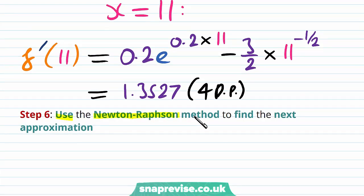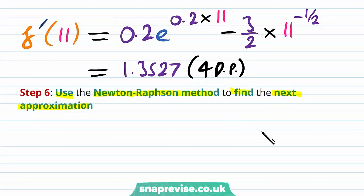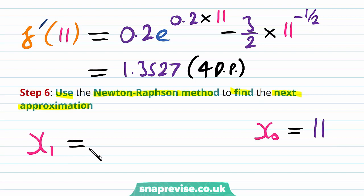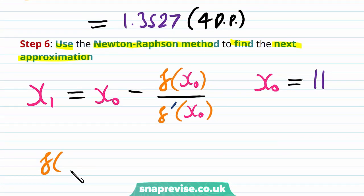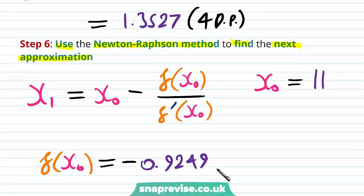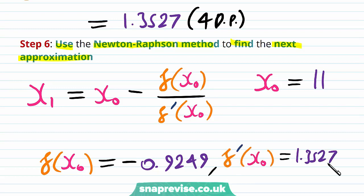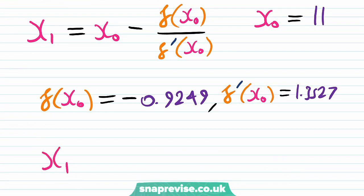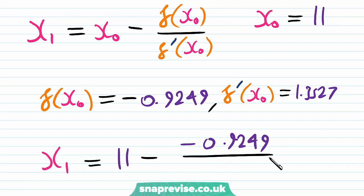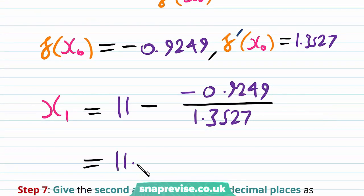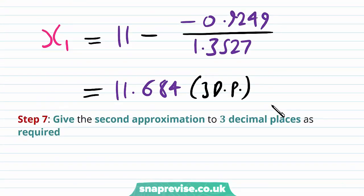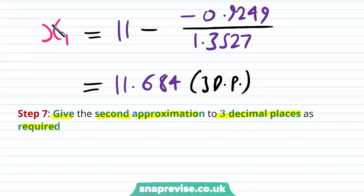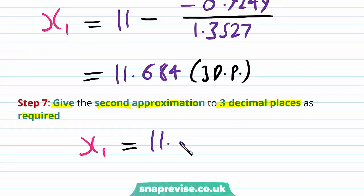Our sixth step is to use the Newton-Raphson method to find the next approximation. We take x0 equals 11 as our first approximation. In general, x1 equals x0 minus f(x0) over f'(x0). We have f(x0) equals minus 0.9249 and f'(x0) equals 1.3527. Therefore x1 equals 11 minus (minus 0.9249) divided by 1.3527, which equals 11.684 to three decimal places. So the next approximation is x1 equals 11.684 to 3dp.